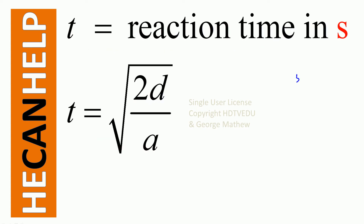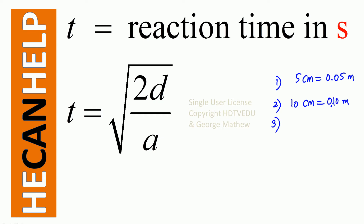We are given: 5 centimeters, which is 0.05 meters; 10 centimeters, which is 0.10 meters; 20 centimeters, which is 0.20 meters; and 40 centimeters, which is 0.40 meters.